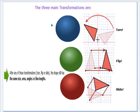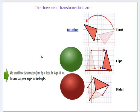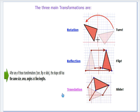There's three main transformations we're going to do. These are your regular terms, like turn, which we also know as rotation. We've got the flip, which in geometry we call reflection. And then we've got the slide, which is your translation. After these transformations, the same size, shape, area, angles, and line lengths are preserved.